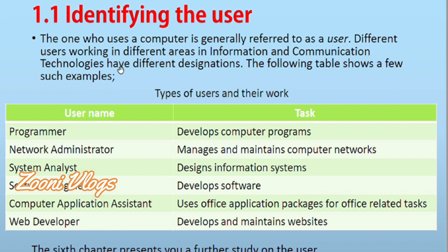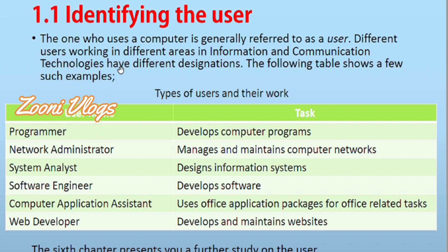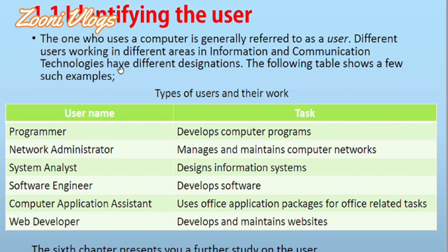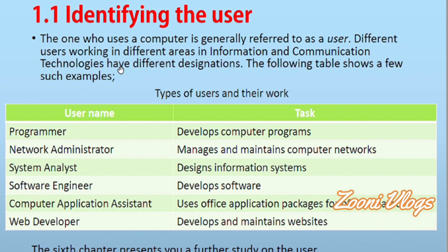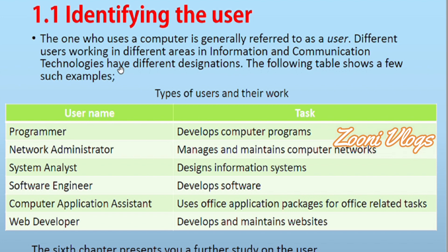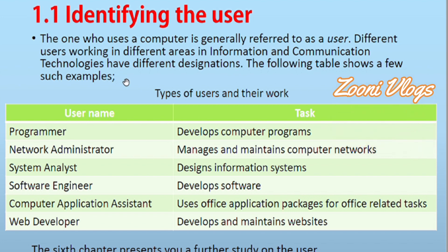If you are using a computer, you are called a user. Different users in different areas of information and communication technology have different designations. Usually, each and every person has their own needs, so they use their computer to fulfil those needs. They have different designations — the following table shows a few such examples.